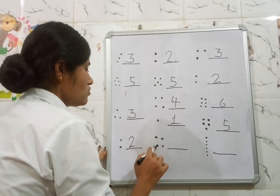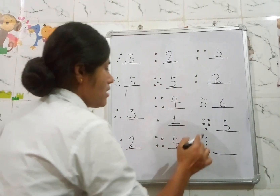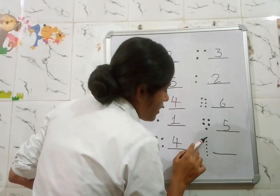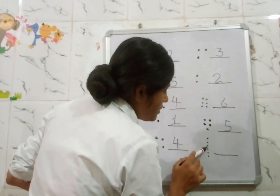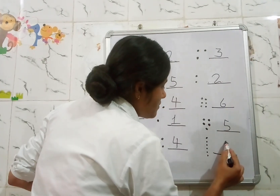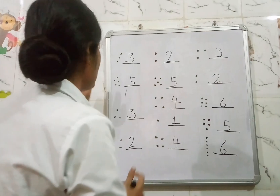1, 2, 3, 4. Now count: 1, 2, 3, 4, 5, 6. We will write here 6. This activity is for LKG class.